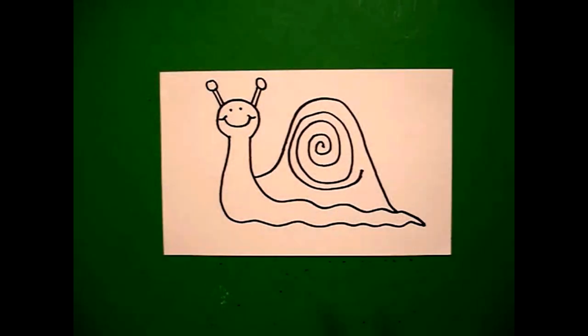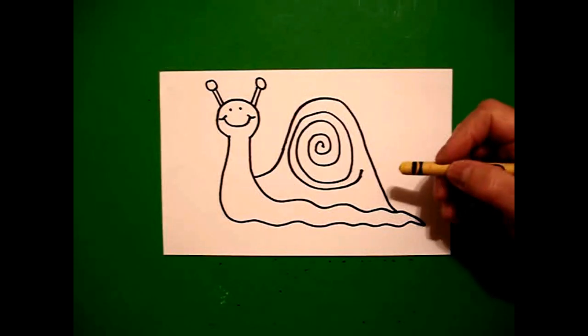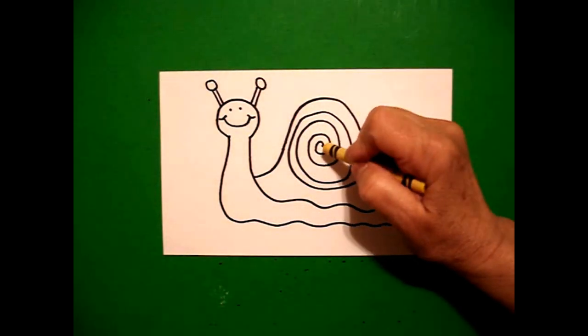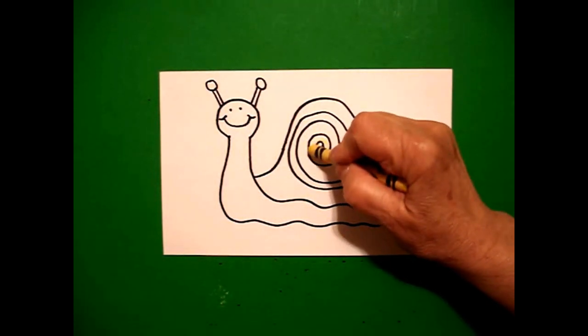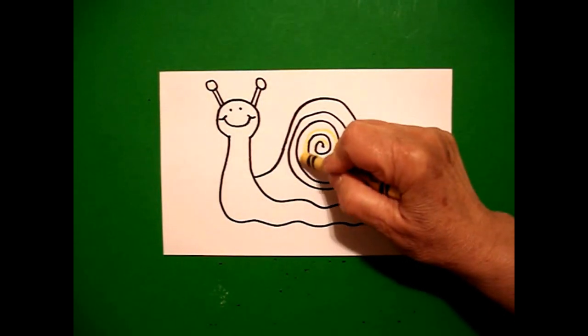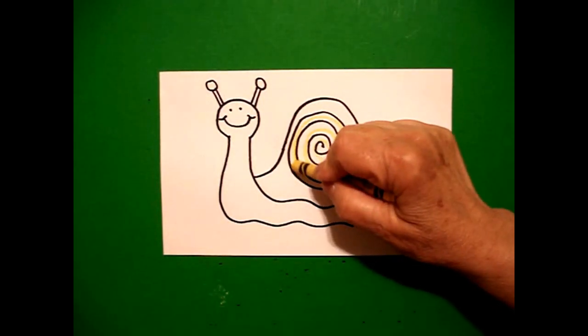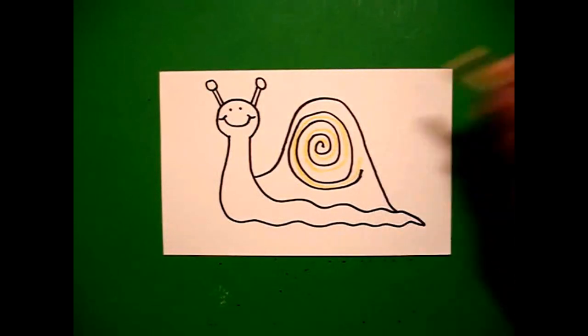Okay, this snail is pretty easy to color because I'm only going to use two colors. The first thing I'm going to do is take my yellow and redraw my yellow spiral right next to it.